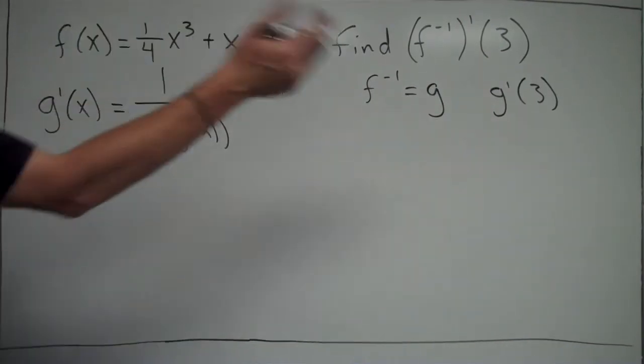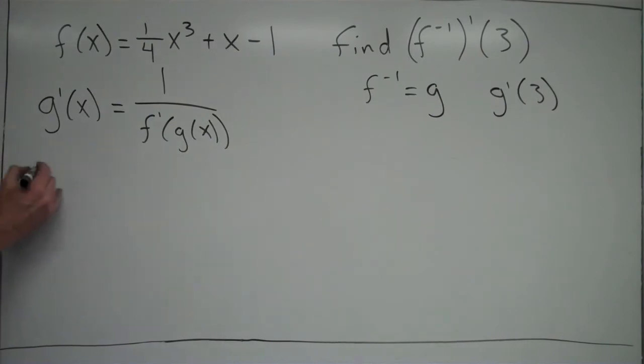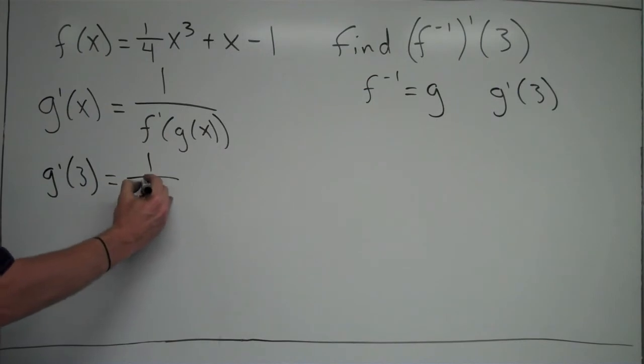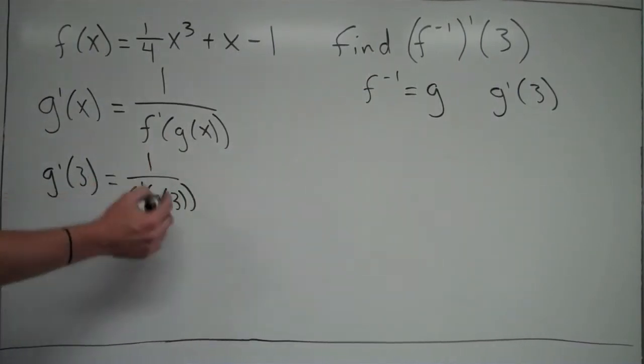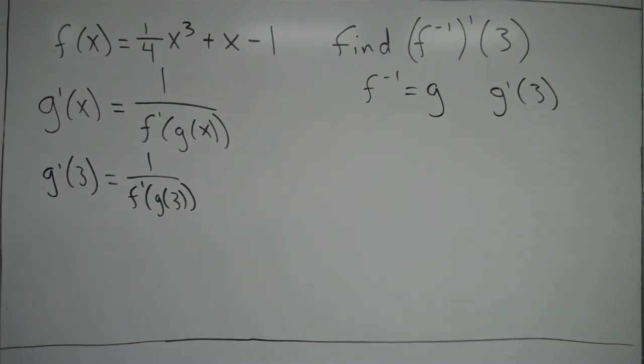Our goal is to find g prime of 3. So I'm going to take 3 and plug it in for x. So g prime of 3 equals 1 over f prime of g of 3. My goal is to work this out. The first thing I'm going to do is figure out what g of 3 equals. That's going to be difficult because we don't actually have the function g of x. We know that g is the inverse of f, but we don't have the actual function. So what we're going to use is one of the properties of inverse functions, that if you have a certain point on one inverse function, the opposite point will come up on the other one.